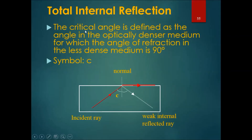The critical angle is defined as the angle in the optically denser medium for which the angle of refraction in the less dense medium is 90 degrees. This symbol C, the critical angle, would be an exact fixed number for any medium. For example, plastic would have one critical angle, glass would have another critical angle, and this number doesn't change.